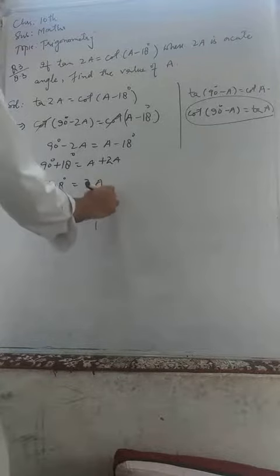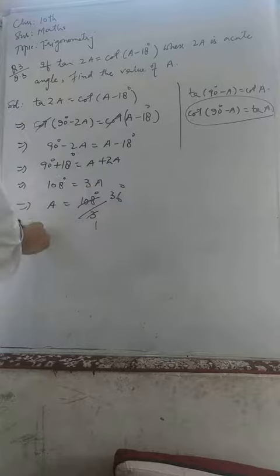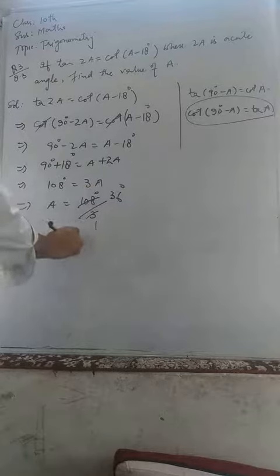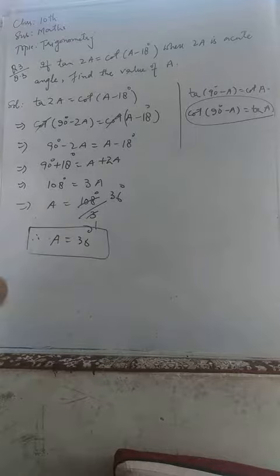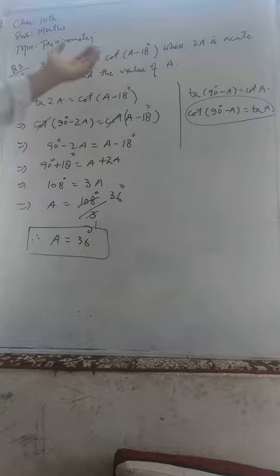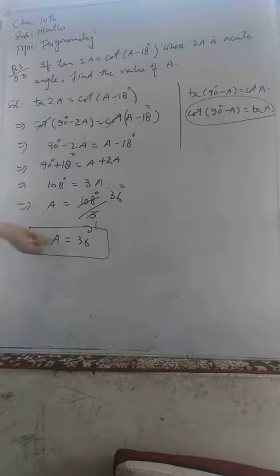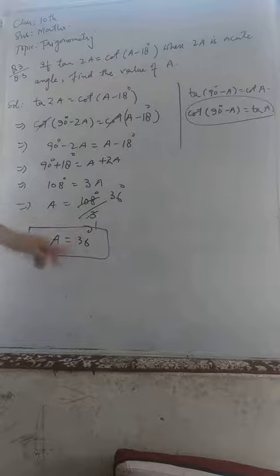108 divided by 3 equals 36, so A equals 36 degrees.